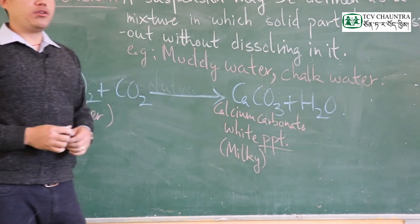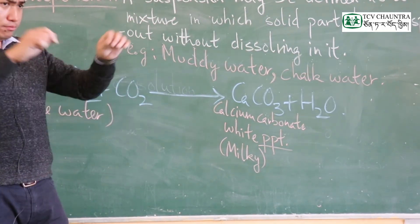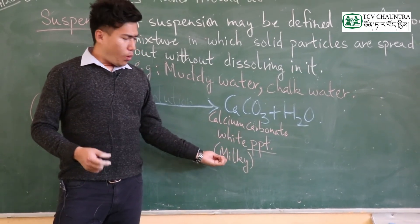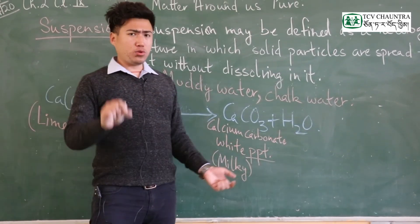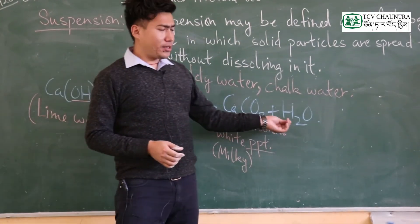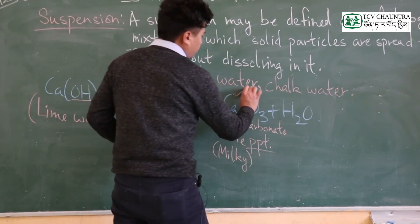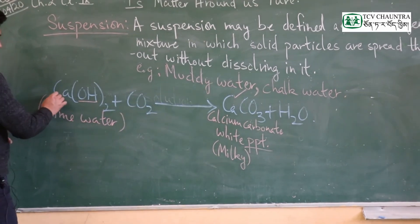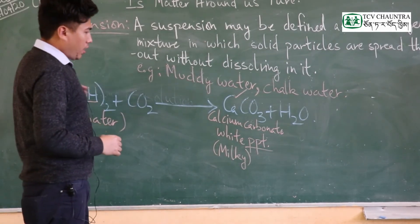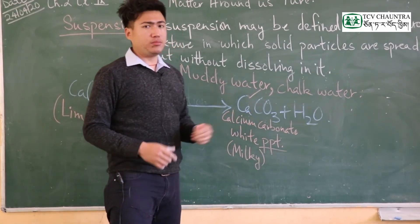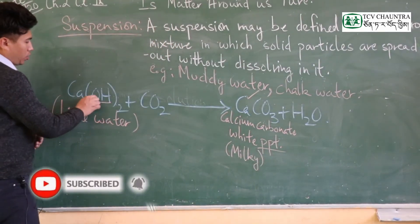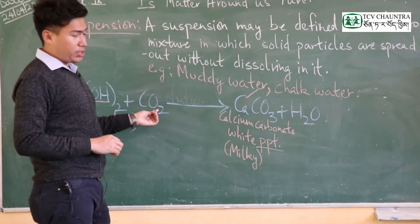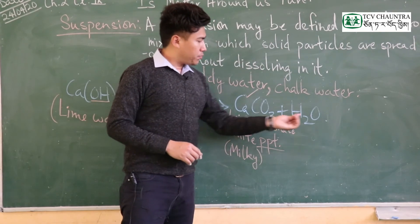The milky appearance is due to calcium carbonate formation, which appears as a white precipitate. This reaction is used as a lab test. In balancing the equation, we check that the number of calcium atoms on the left-hand side equals those on the right-hand side. Similarly, oxygen atoms are balanced on both sides.